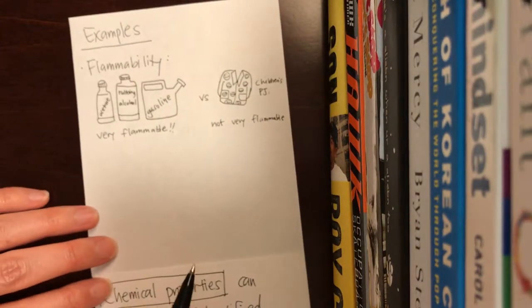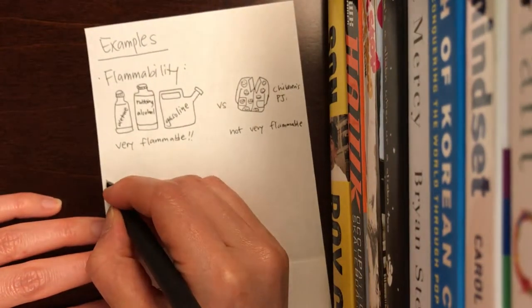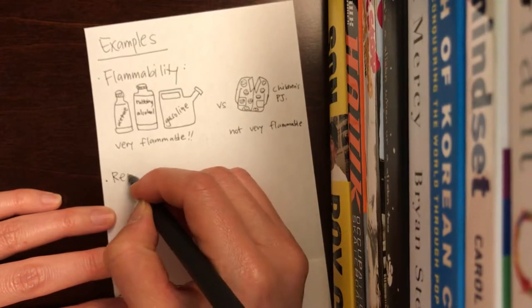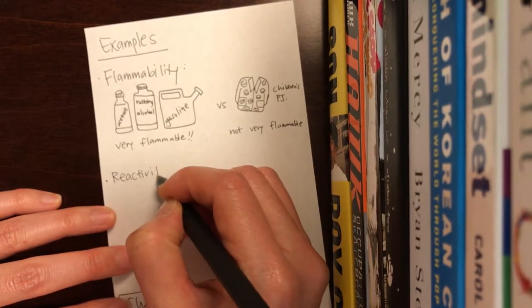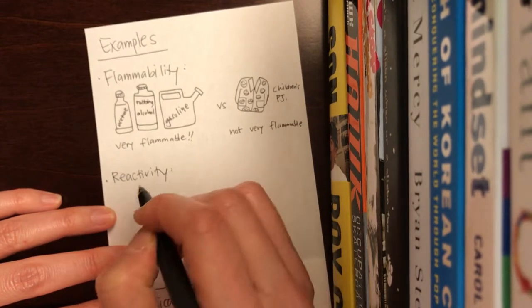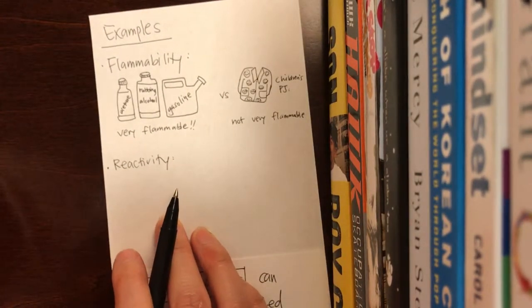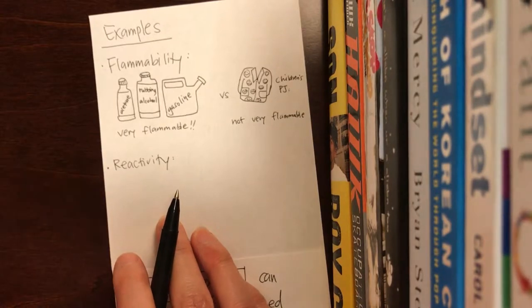The other example of chemical property that was given is reactivity, meaning how well can it react with another compound to produce a completely new compound.